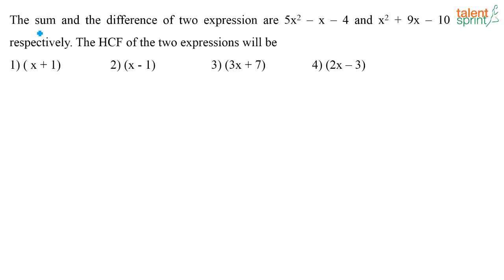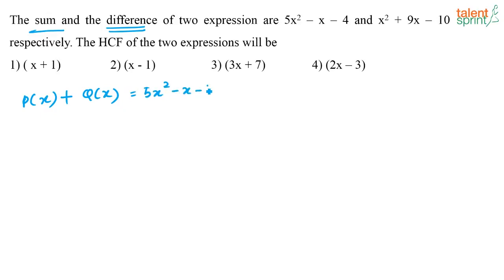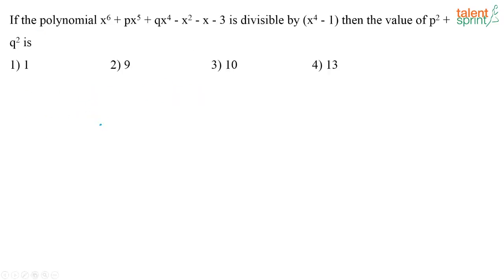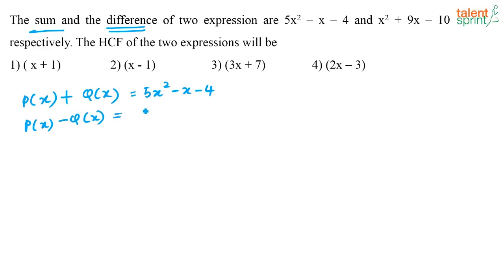They have given the sum and the difference of two expressions. If one expression is P of x and another expression is Q of x, they have given that P(x) plus Q(x) is equal to 5x squared minus x minus 4. Similarly, P(x) minus Q(x) is equal to x squared plus 9x minus 10. So first I have to find out what P(x) and Q(x) are, and then find their HCF.